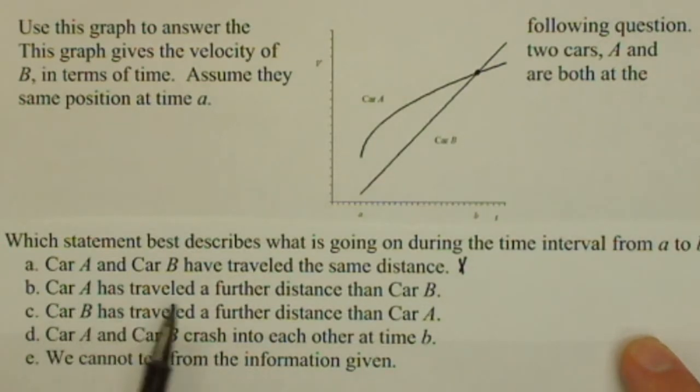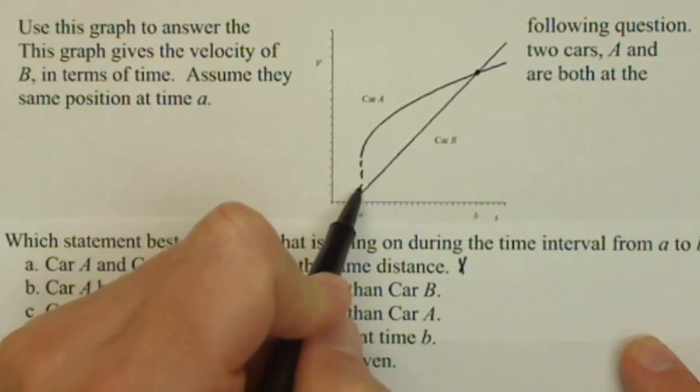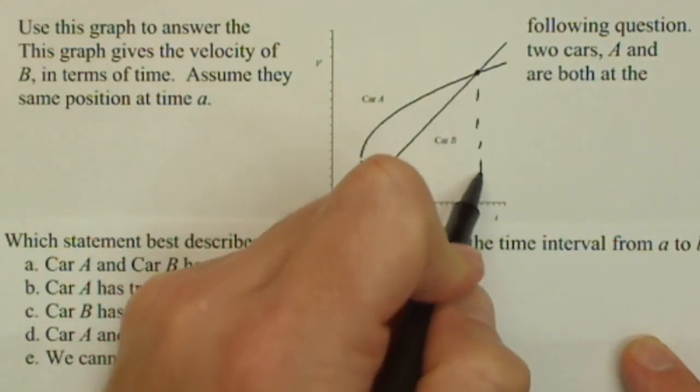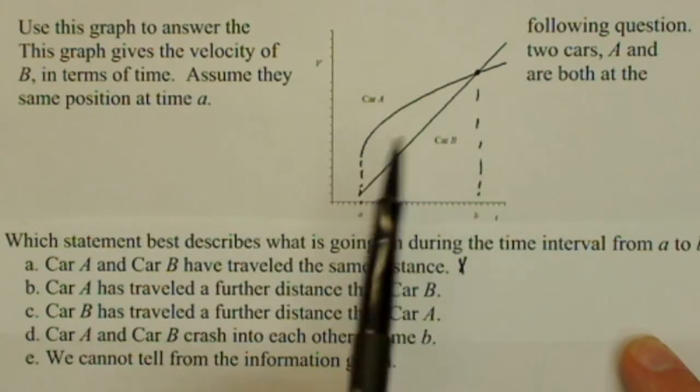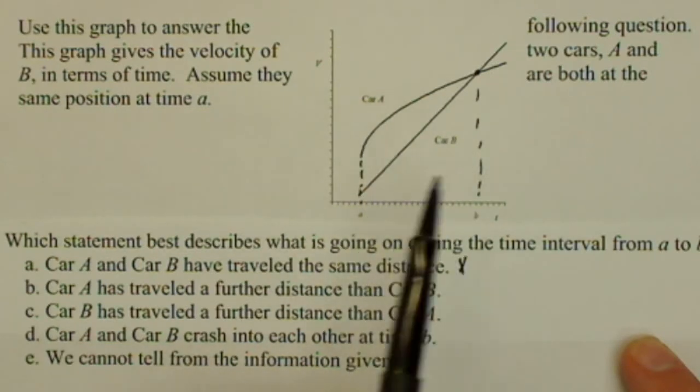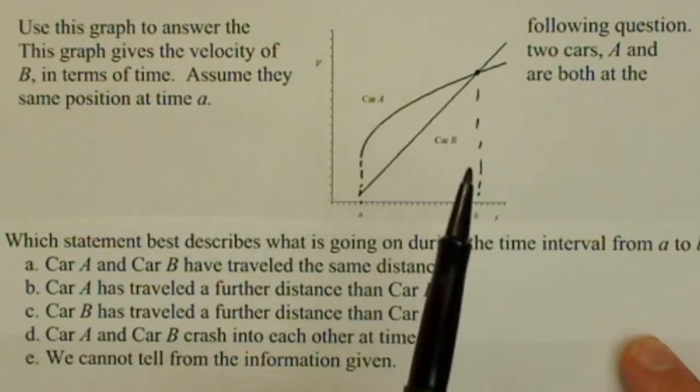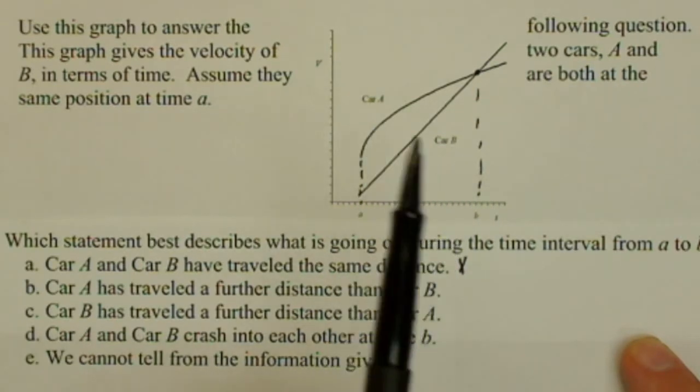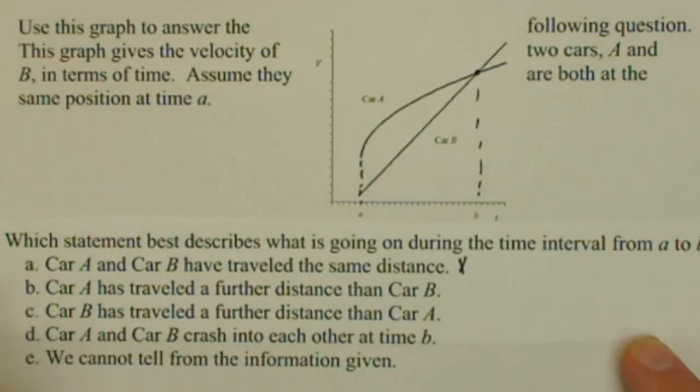Car A has traveled a further distance than car B between A and B. Well, let's drop in vertical lines between A and B. And remember, these are velocity curves. Notice that car A has more area underneath than car B. We know that the area under a velocity curve gives us the distance traveled if we have a positive velocity curve. So, car A is going to have been traveled further than car B. So, that is a true statement that we can make from this graph.